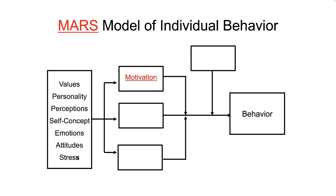First, we look at M for motivation, defined as the internal forces that affect a person's voluntary choice of behavior. Motivation truly best comes from within — managers typically cannot technically motivate other people; all they can do is set up conditions where individuals motivate themselves. Motivation is comprised of three components: direction, intensity, and persistence. Direction is under the voluntary control of an individual — people choose the direction of their efforts. Intensity is the degree to which they apply vigor and zeal towards achieving specific goals. Persistence is the stick-to-itiveness of motivation — the degree to which people will put forth concerted effort toward achievement of a goal.